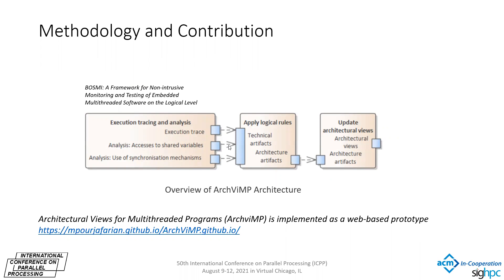In this slide we see an overview of our work. The first part is a combination of static and dynamic analysis, based on our previous work on a framework called Bosmi. Bosmi analyzes software under test using LLVM interpretation and reconstructs the control flow graph. Then it executes software tests and records an execution trace. Dynamic analysis provided by Bosmi includes coverage analysis, analysis of shared memory locations between threads, using a Razor-Lux algorithm, and identification and usage of several types of synchronization mechanisms.